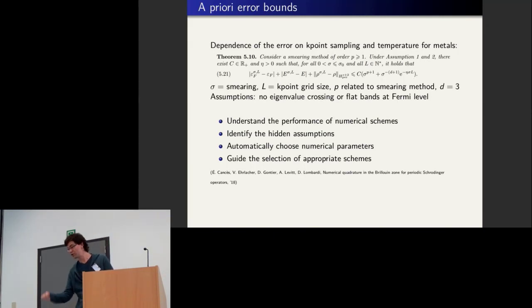And what you find is that this error goes down as L goes to infinity, as expected. But the pre-factor depends on the temperature. So of course, this is what you will know: as you increase the temperature, it gets easier to converge with respect to the number of k-points.